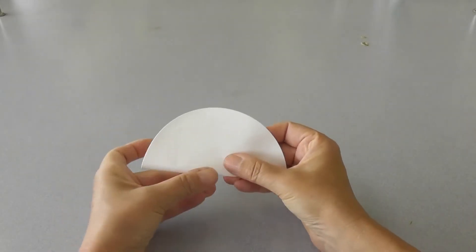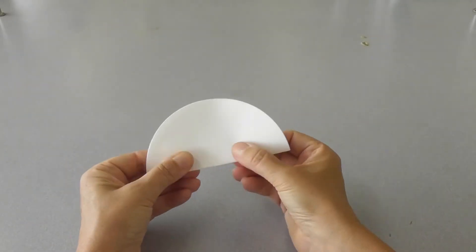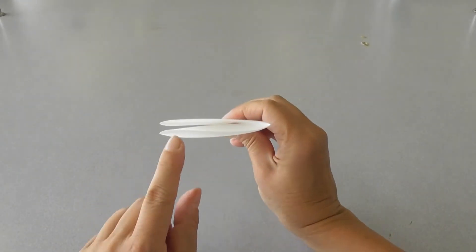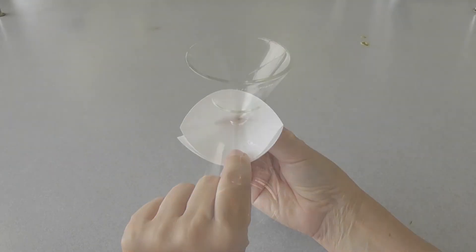If using regular filter paper, fold it in half and then in half again. Open up one of the folds, creating a cone and place this cone into the funnel.